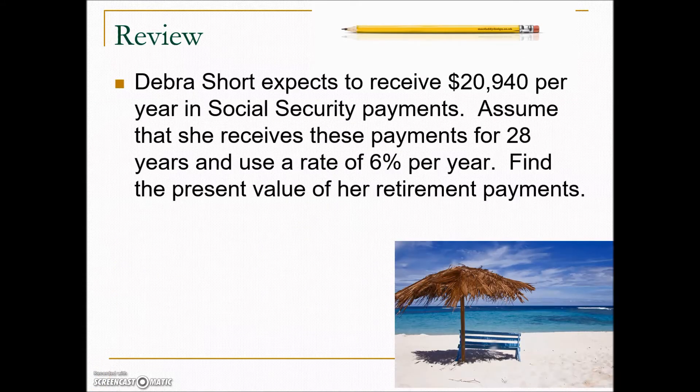This next problem has Deborah Short expecting to receive $20,940 per year in Social Security payments. Assume she receives these payments for 28 years at a rate of 6% per year. We want to find the present value of her retirement payments — that is, what lump sum is needed today to pay out this amount each year for the next 28 years.